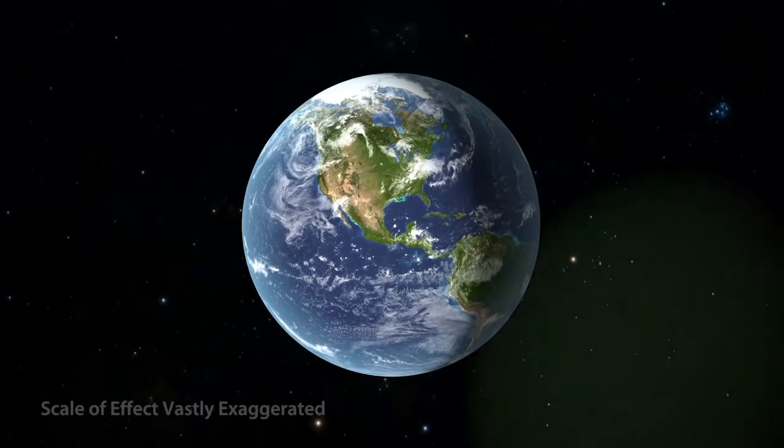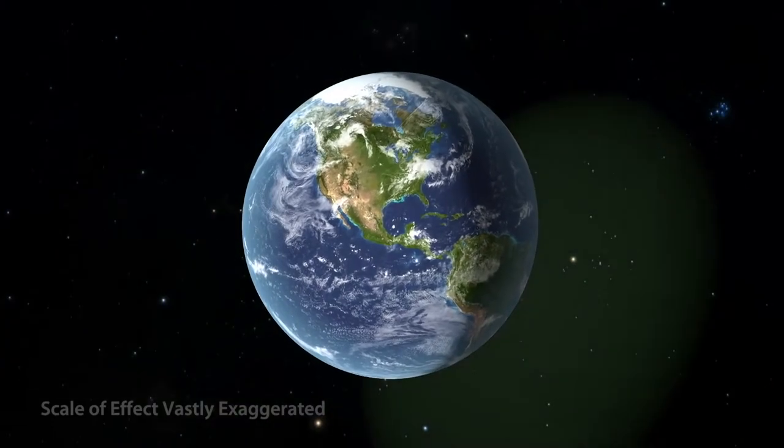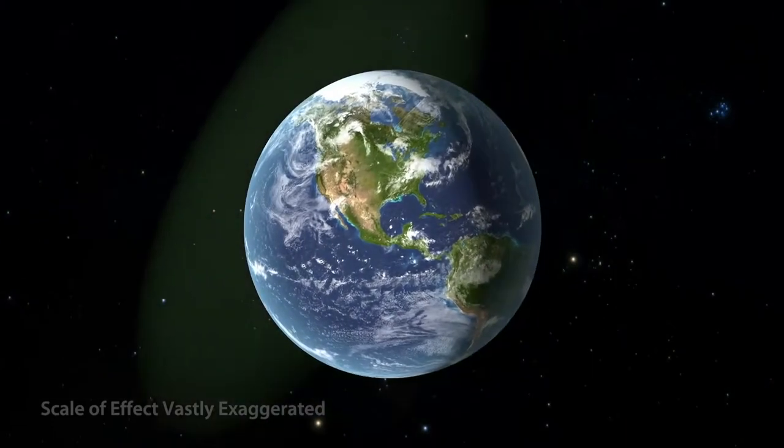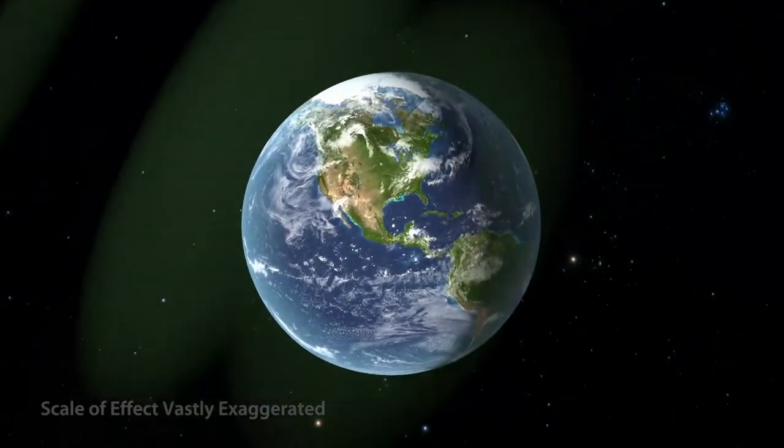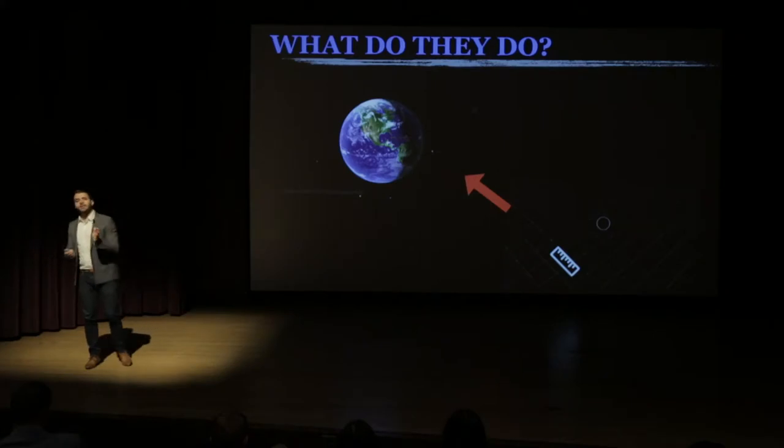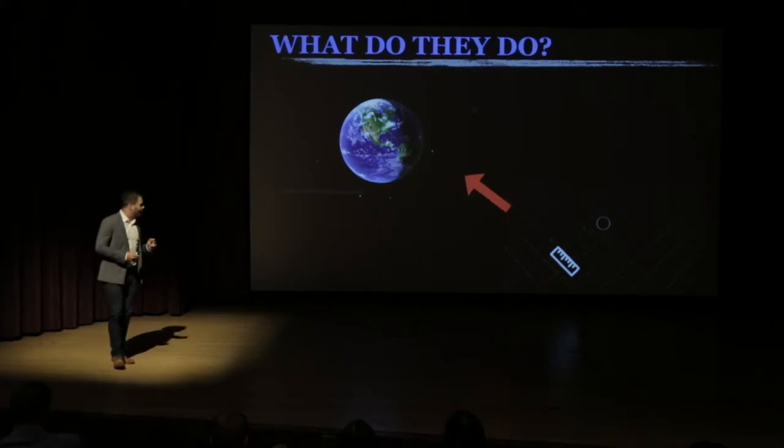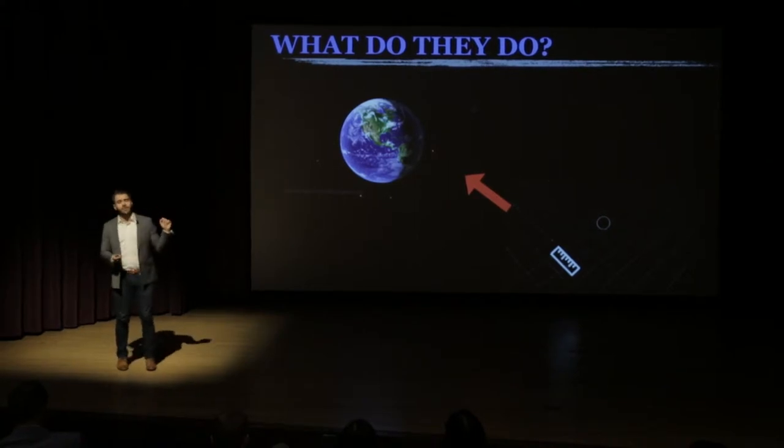They cause distances to expand and contract. Now, the amount that these ripples actually cause expansion and contraction is unbelievably minuscule. So what you would need to do to be able to detect these ripples and to use them to learn about our universe is to design a very, very precise ruler.